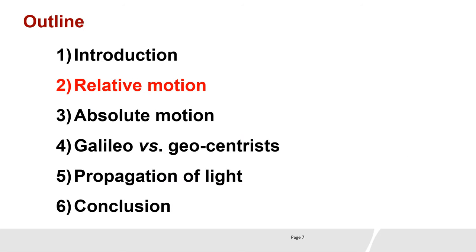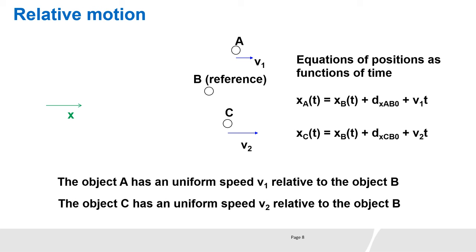Relative motion. Let's consider three objects: A, B, and C. We analyze the motion in x-axis. B is the reference. Object A is moving with respect to B at the speed v1. Object C is moving with respect to B at the speed v2. We can write this in terms of equations of positions as functions of time.